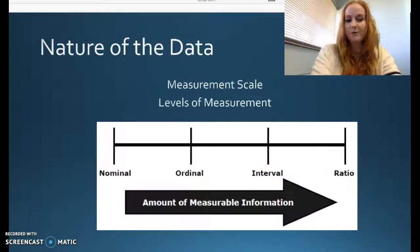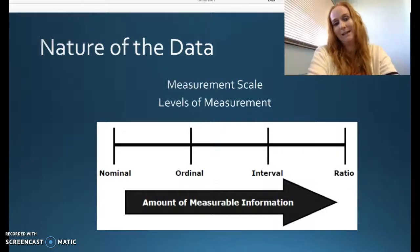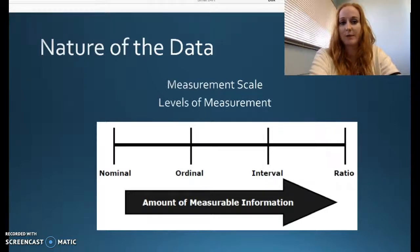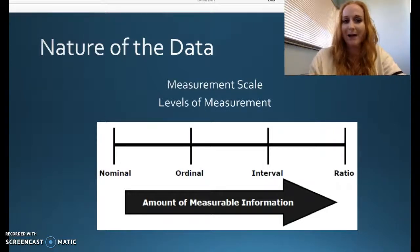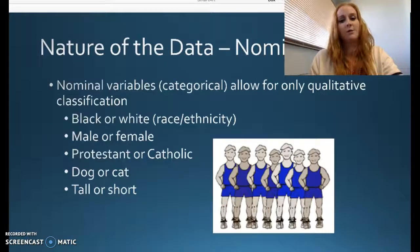Just by review, nominal, ordinal, interval, and ratio. The further to the right we go, the more measurable information we get. And our favorite thing to measure is things in quantities, because that way we can do a mean and all kinds of other statistics that give us a little bit more accuracy and exactness. Okay, so let's actually go into what these measurement types are.